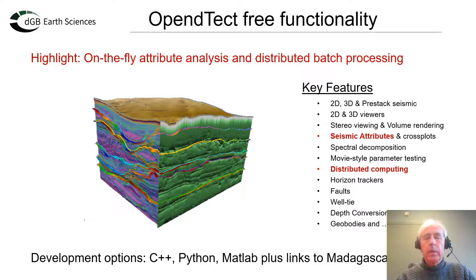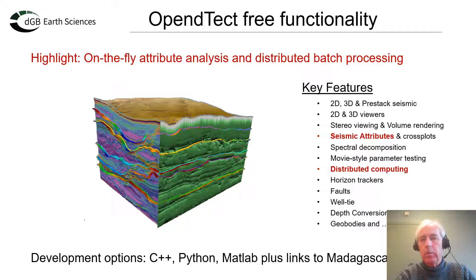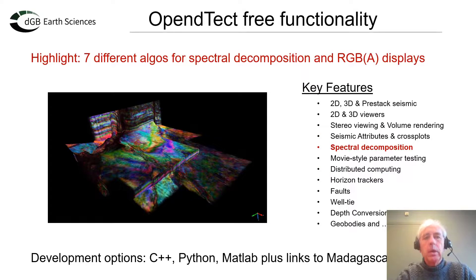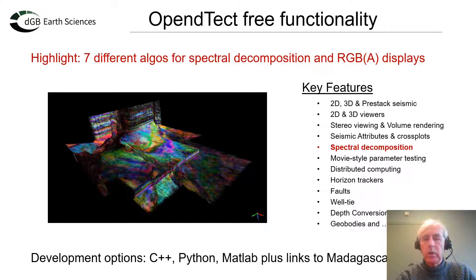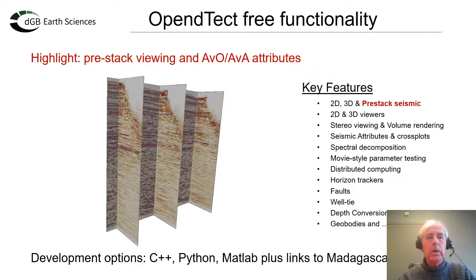A few highlights: OpenDetect offers and supports a lot of attributes. You can calculate attributes on the fly and compute attributes using distributed computing in batch mode, so that you can use all the computer power available to you. Another highlight is spectral decompositions. There are numerous different ways of calculating spectral decompositions supported in the software, and RGBA visualization is also available for detailed analysis.